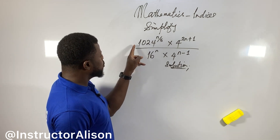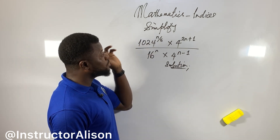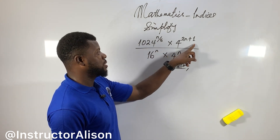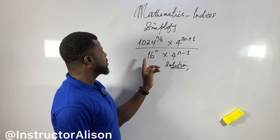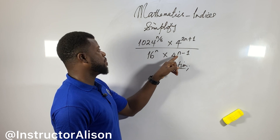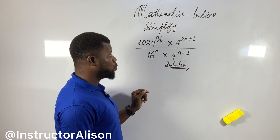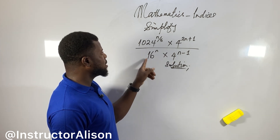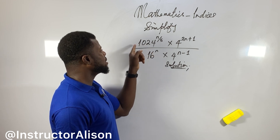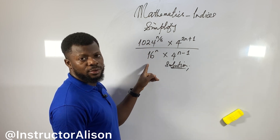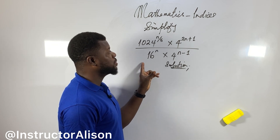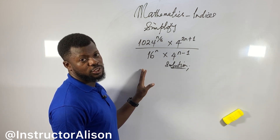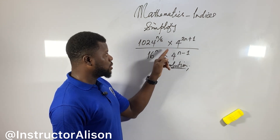So now the problem is: 1024 to the power of n over 5, times 4 to the power of 2n plus 1, divided by 16 to the power of n times 4 to the power of n minus 1. The presence of n inside these expressions causes problems. One of the big issues is that the bases here are different — 16, 1024 — and that's the main difficulty students face.